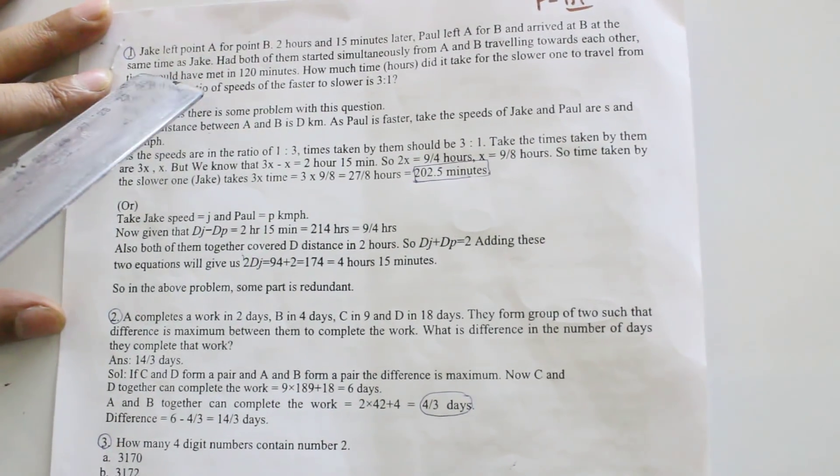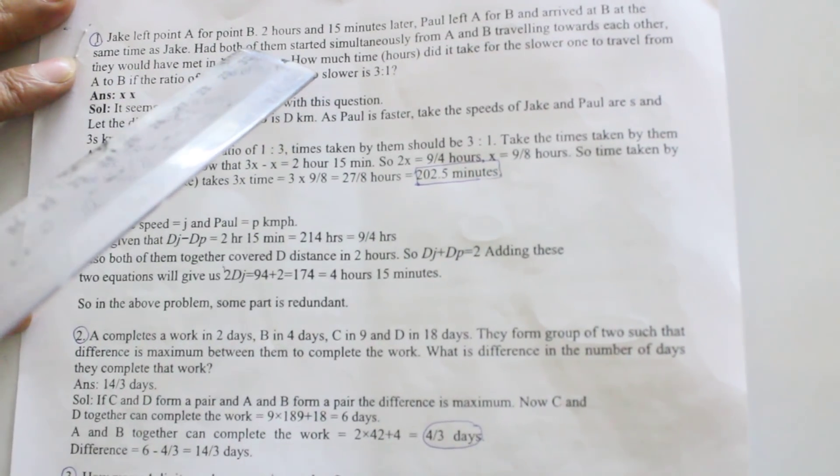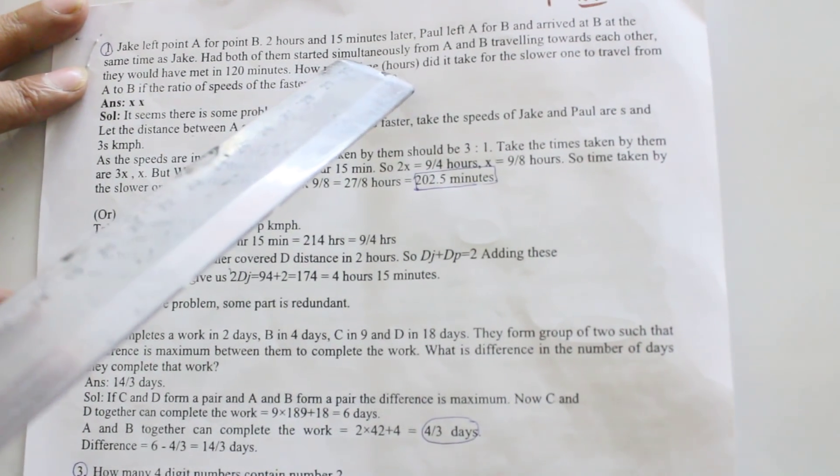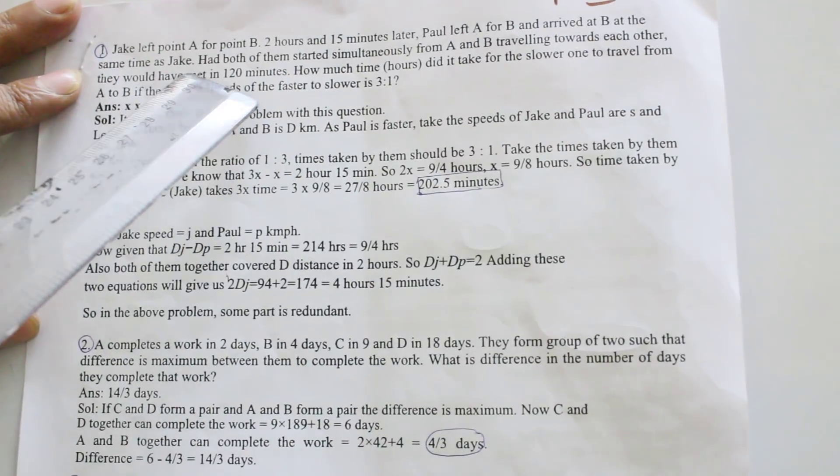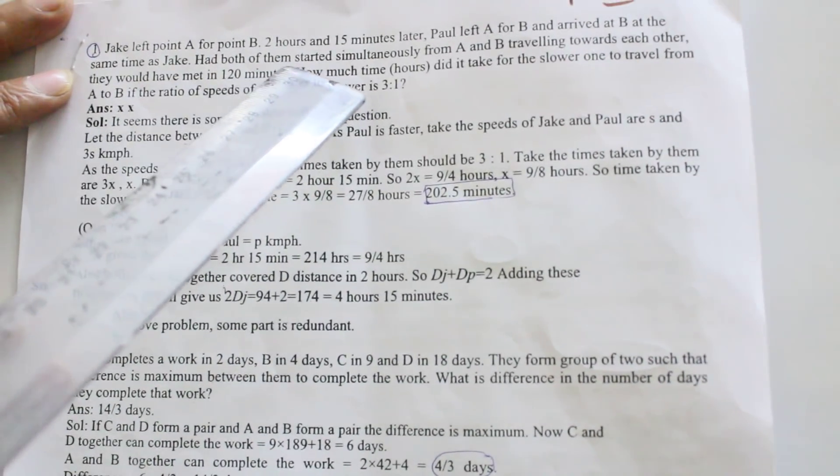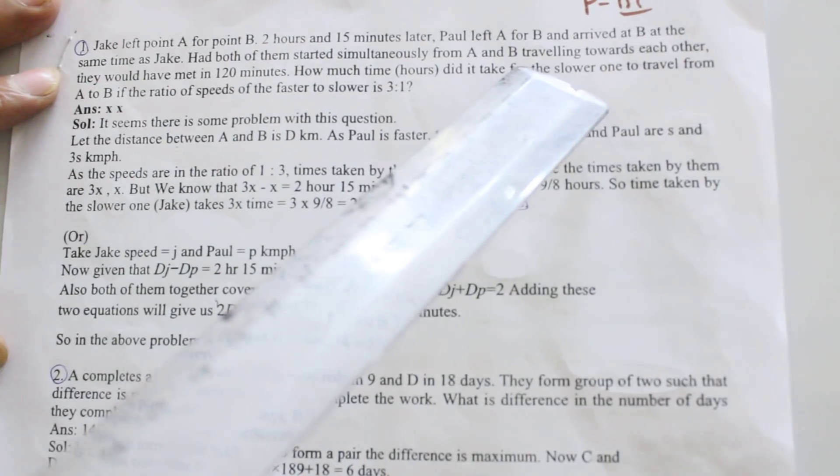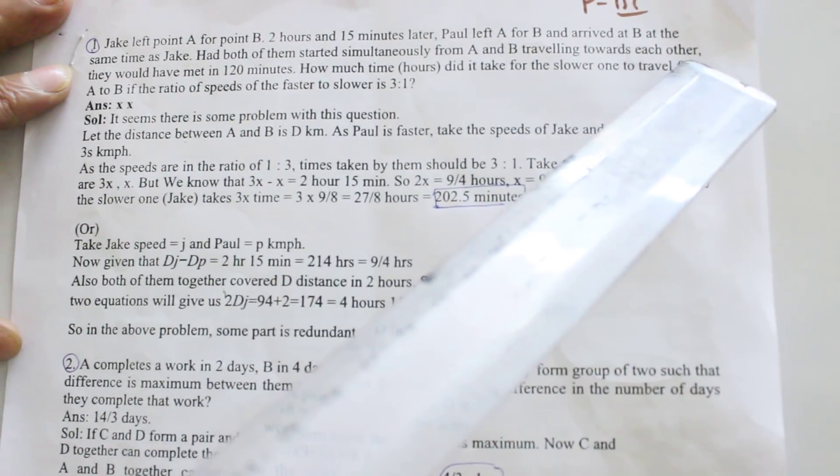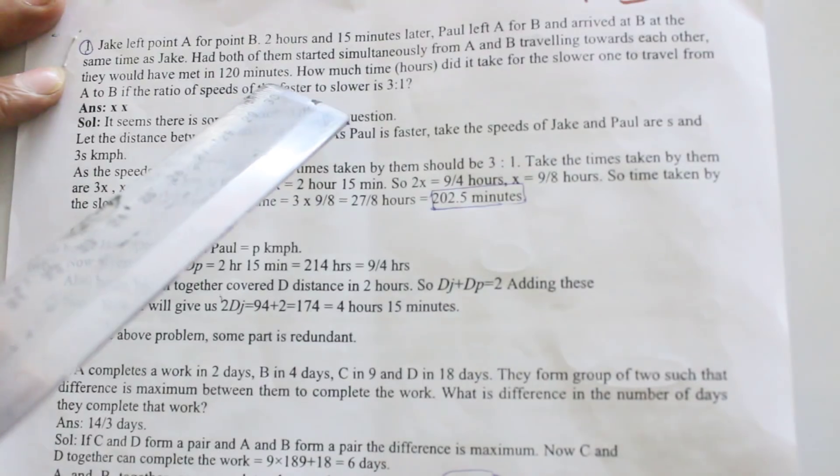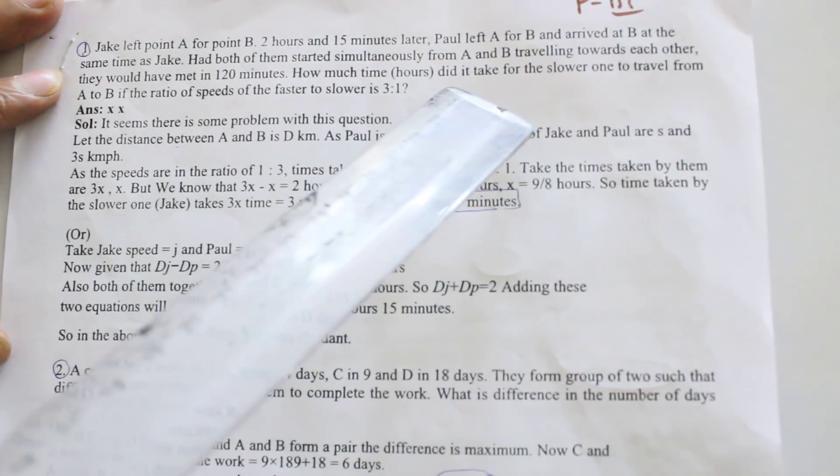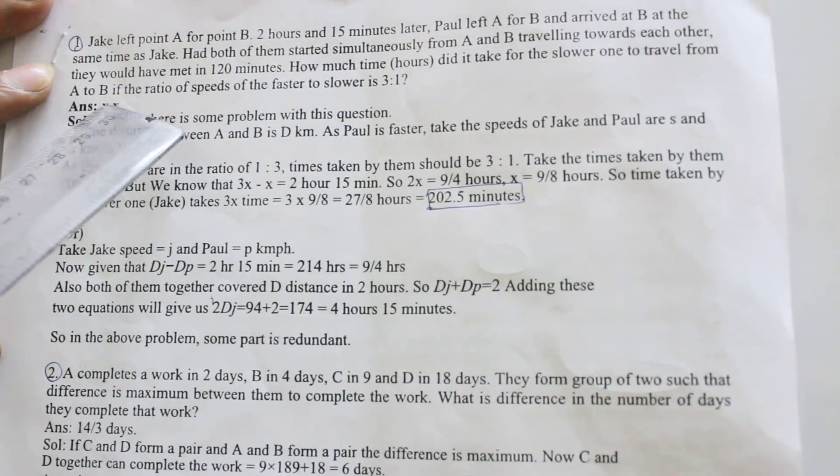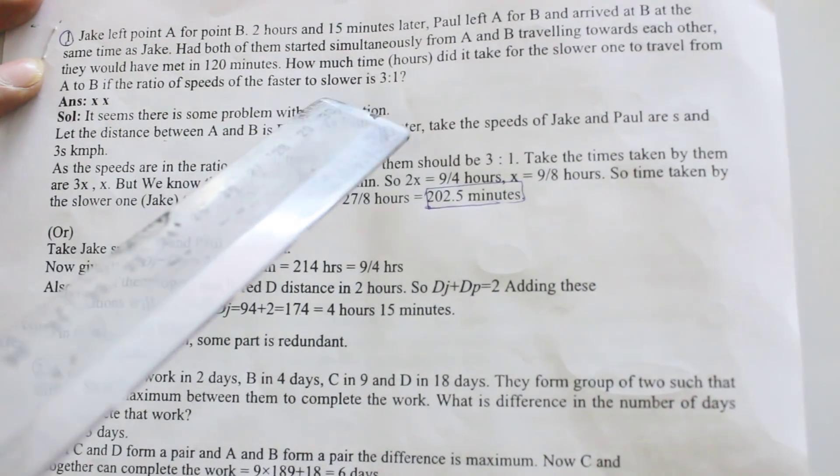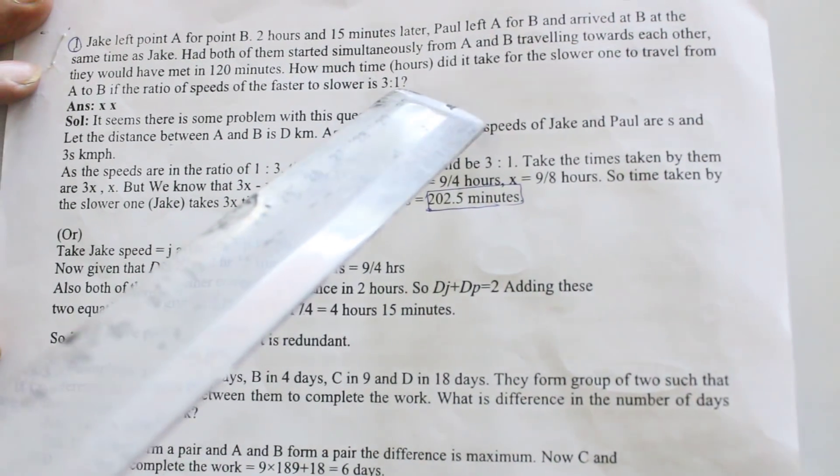First question: Jackie left point A for point B 2 hours and 15 minutes later. Paul left A for B and arrived at B at the same time as Jackie. Had both of them started simultaneously from A and B traveling towards each other, they would have met in 120 minutes. How much time did it take for the slower one to travel from A to B if the ratio of the speeds of faster to slower is 3 is to 1?